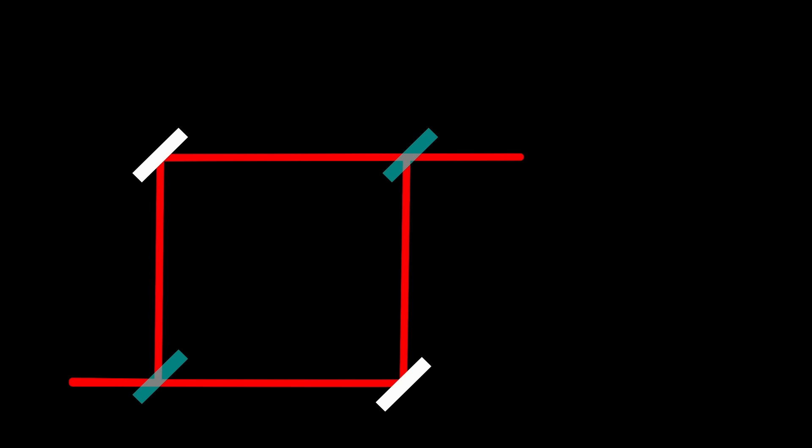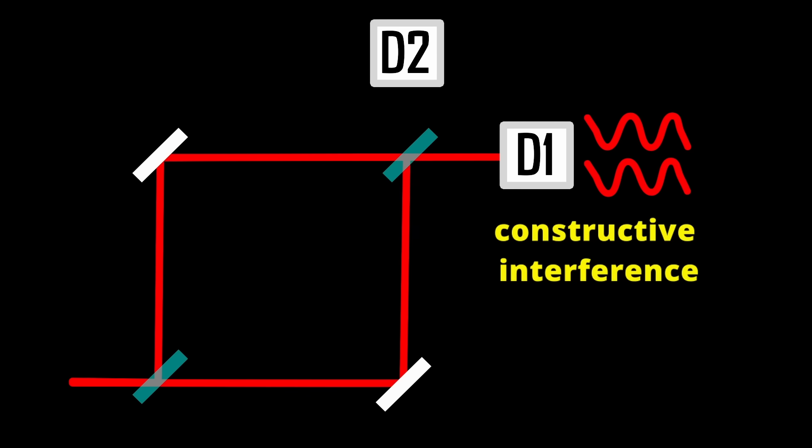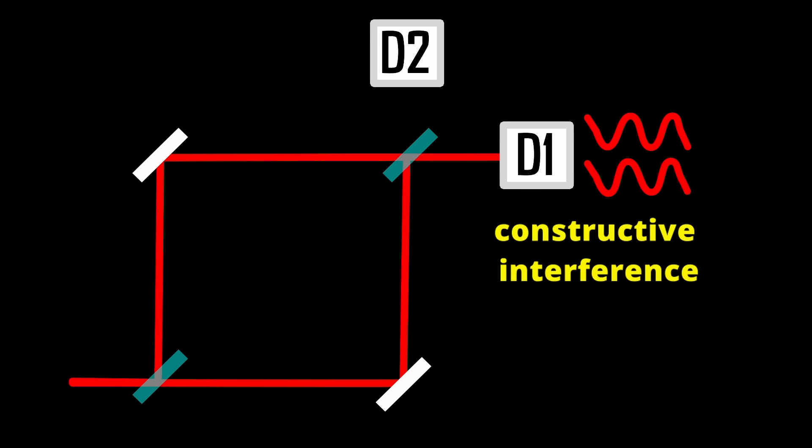They used a Mach-Zehnder interferometer device that splits an incoming photon into a superposition of two paths and then recombines the paths. The path length is chosen so that on one output port one gets constructive interference, so a signal, and on the other output port one gets destructive interference, so it remains dark. This is the case even for single photons.